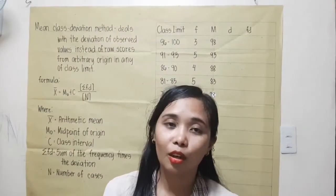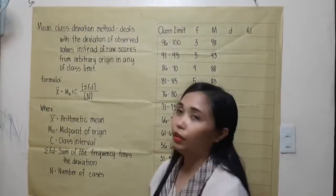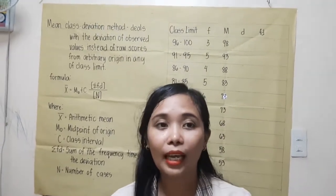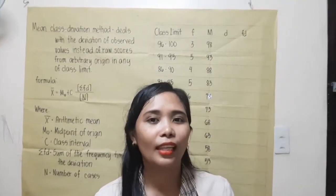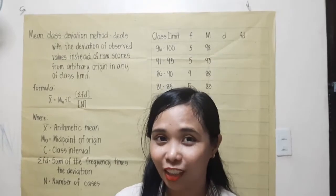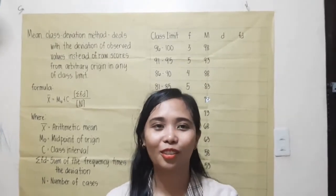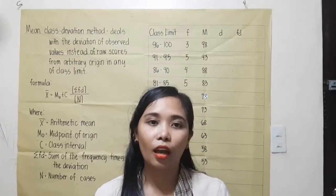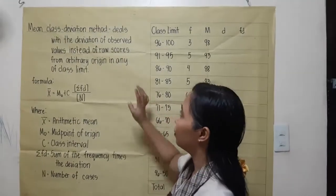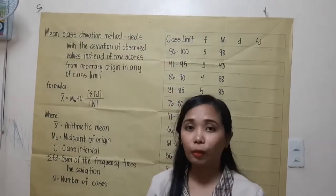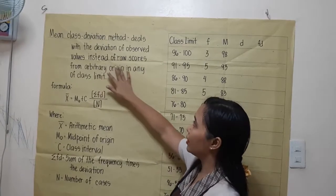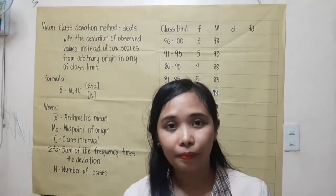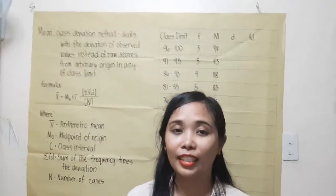Let's move on to the mean class deviation method. This method provides a shorter way of computing the mean in a frequency distribution and is commonly used by classroom teachers and future educators. The class deviation method deals with the deviation of observed values from an arbitrary origin in any class limit. The point of origin arbitrarily chosen is zero.